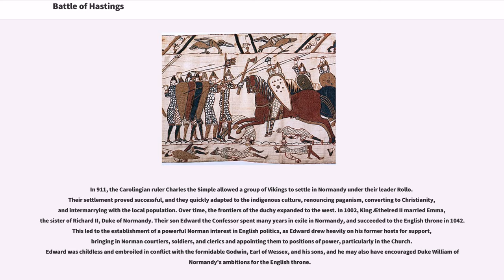In 1002, King Ethelred II married Emma, the sister of Richard II, Duke of Normandy. Their son Edward the Confessor spent many years in exile in Normandy and succeeded to the English throne in 1042. This led to the establishment of a powerful Norman interest in English politics, as Edward drew heavily on his former hosts for support, bringing in Norman courtiers, soldiers, and clerics and appointing them to positions of power, particularly in the church. Edward was childless and embroiled in conflict with the formidable Godwin, Earl of Wessex, and his sons, and he may also have encouraged Duke William of Normandy's ambitions for the English throne.